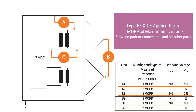For F-type applied parts, all patient connections shall be separated from all other parts by means equivalent to one means of patient protection for a working voltage equal to the maximum mains voltage, which can be a more strict requirement than the general requirement of two means of patient protection for a working voltage equal to the voltage in secondary circuits.